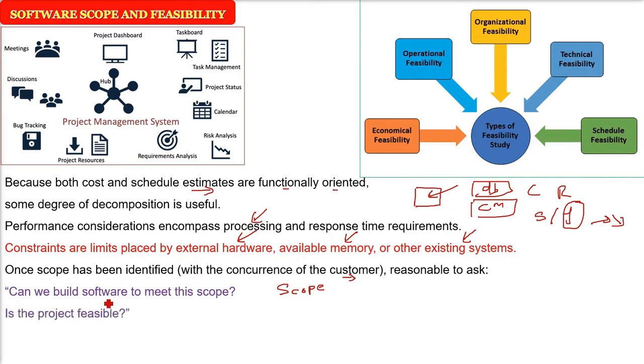Is the project feasible the way we have thought of it or conceived it? Putnam and Myers suggested that after the scope is properly understood,